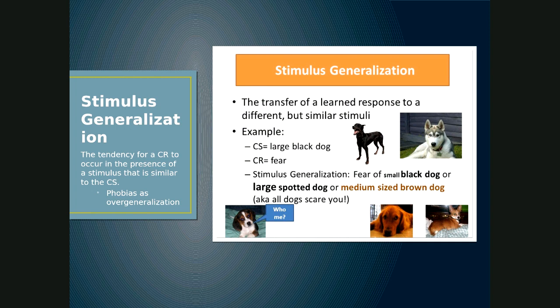Phobias can be conceptualized as over-generalizations — you've generalized your conditioned response too much. If you were bitten by a Rottweiler but develop a fear of any medium or small dog, including a Chihuahua, you've over-generalized that fear. A personal example: someone with a phobia of snakes fears not just real snakes in the garden, but snakes on TV, in photographs, and even drawings — that fear has over-generalized to the point of being a phobia.